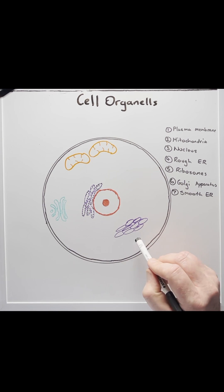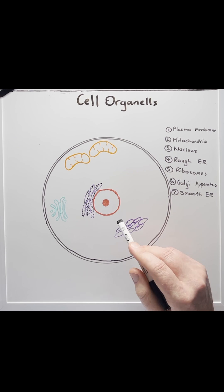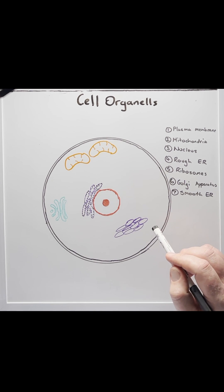Number seven, we're left with a smooth ER. It's called smooth because it doesn't have any ribosomes. The smooth ER helps to synthesize fats and helps to detoxify the cell.